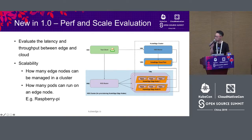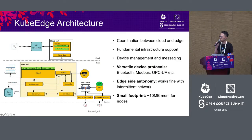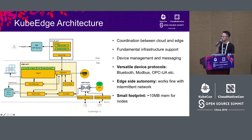Currently some community members have tested up to 4,000 nodes, though it is only a reference result. For communication between cloud hub and edge hub, we are using WebSocket and also studying the QUIC protocol. We have a version based on QUIC, but the performance is still under evaluation, and we expect some improvement.